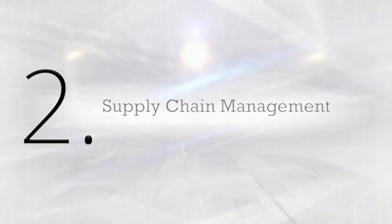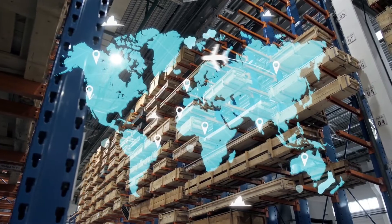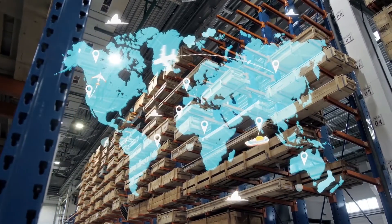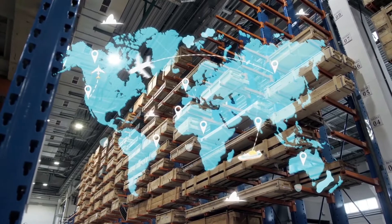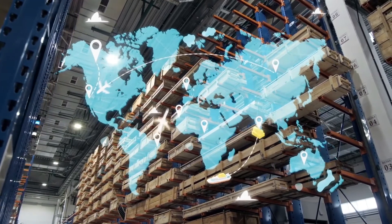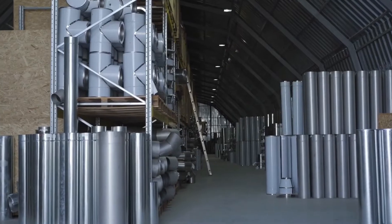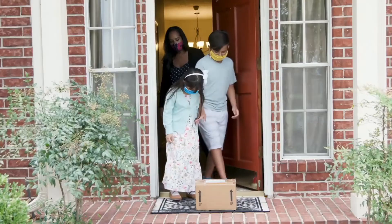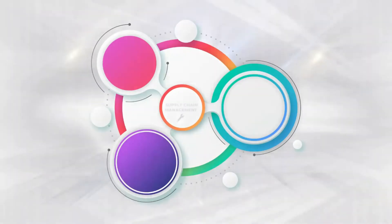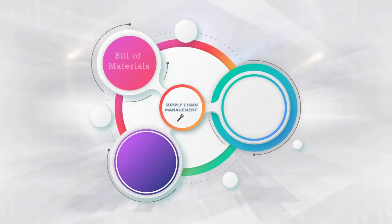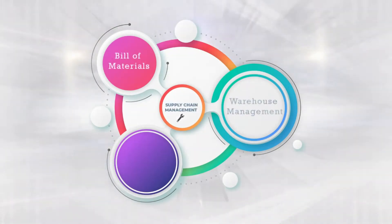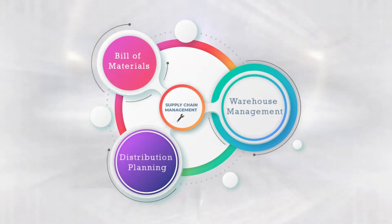The second key feature of industrial ERP systems is supply chain management. Supply chain management encompasses the entire process for the generation, production and delivery of a final product. It also involves product design, material acquisition and the distribution of goods to the end customer. Common supply chain management features include bill of materials, warehouse management and distribution planning.